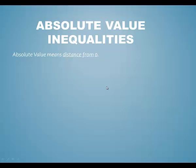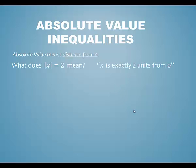In the first video we decided that the absolute value means distance from 0. We looked at the equation absolute value of x equals 2, and we said that meant x was exactly 2 units from 0. x might be 2 units to the left of 0 or 2 units to the right of 0, so the solution set was negative 2 and 2.